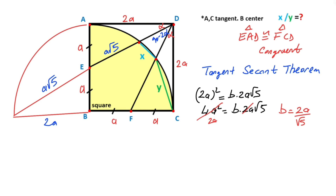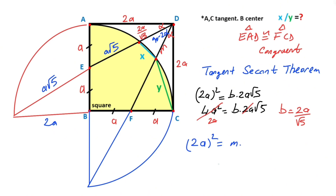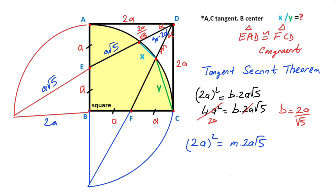After that, I want to represent this length with M. Likewise, if we apply the tangent secant theorem again, let's extend point F and point B like this, and complete the quarter circle to a semicircle. Then applying the tangent secant theorem: (2A)² = M times 2A√5. Therefore, 4A² = M times 2A√5, which means M = 2A/√5.